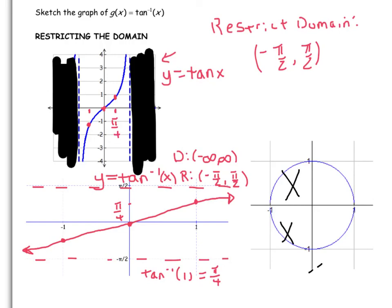Because negative π/2 is here and π/2 is here. So we consider only angles that range from negative π/2 to π/2, not including them.